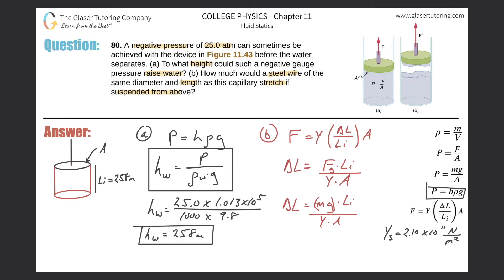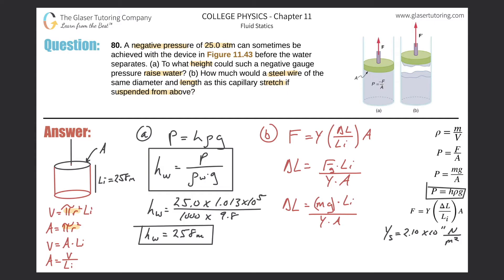Since we don't know the cross-sectional area, let's investigate. The volume of a cylinder is V = πr²·h = πr²·L_i. The cross-sectional area is A = πr², which appears in the volume formula. So volume equals area times initial length: V = A · L_i. Solving for area: A = V / L_i. That lets us substitute for area — but now we don't know the volume either.